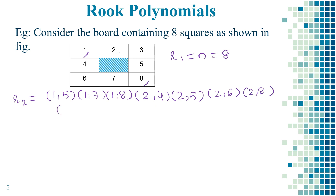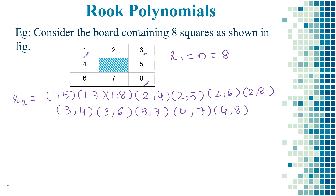Same way if you place the first pan over 3, the same row and same column cannot be used. So (3,4), (3,6), and (3,7). Next with the combination of 4, so (4,7) and (4,8). And with 5, we have (5,6) and (5,7). So these are all the possible ways available for the placement of the two pans.